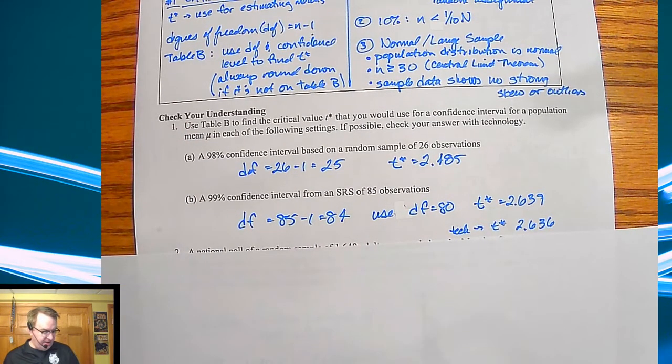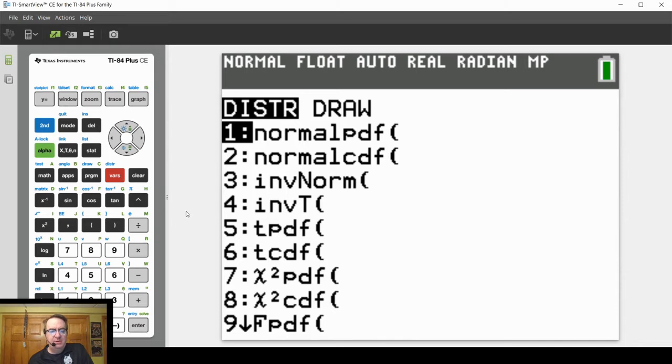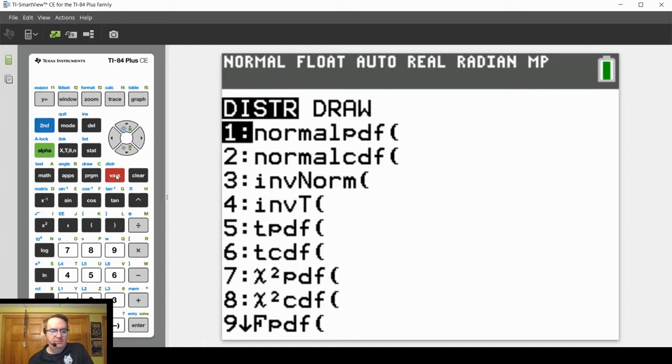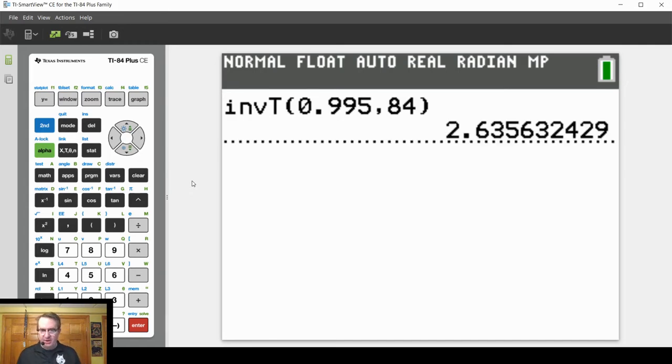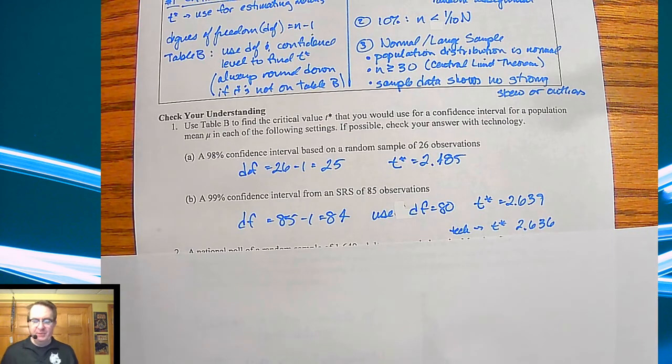From the tech side of things, you're going to go to inverse t. We're going to do option number four. For this one, remember for 99% that means that we're going to have to go to 99.5 percent because we have to do the entire left hand side and everything but just that right hand tail. 0.995. Here are degrees of freedom, we can't actually do 84. I'm going to go ahead and paste and so there we're going to get 2.636.